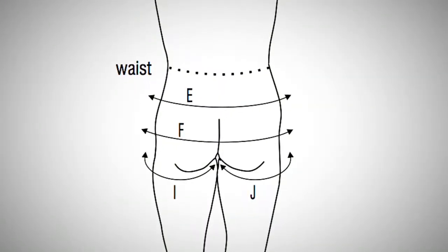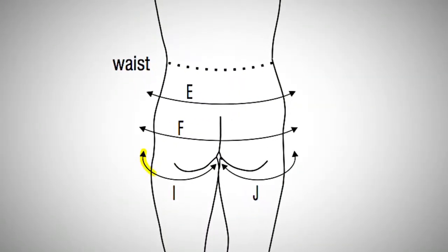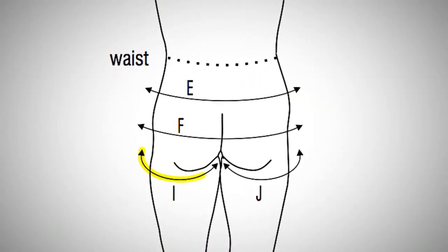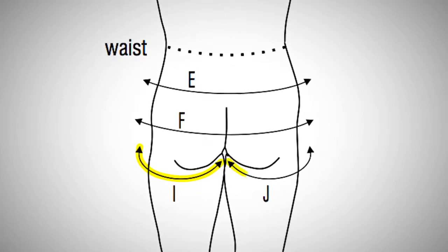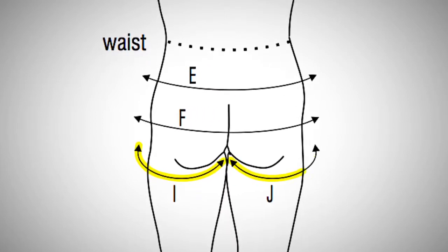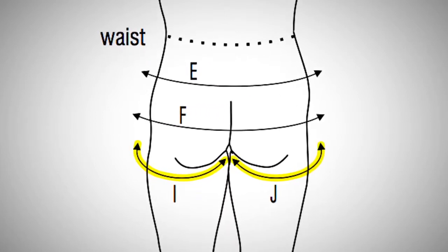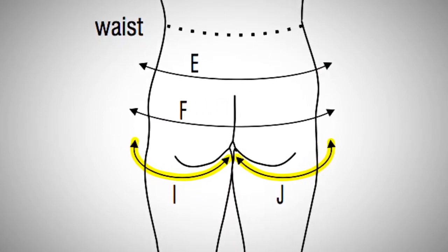The capital I measurement is the circumference at the top of the left leg. The capital J measurement is the circumference at the top of the right leg.